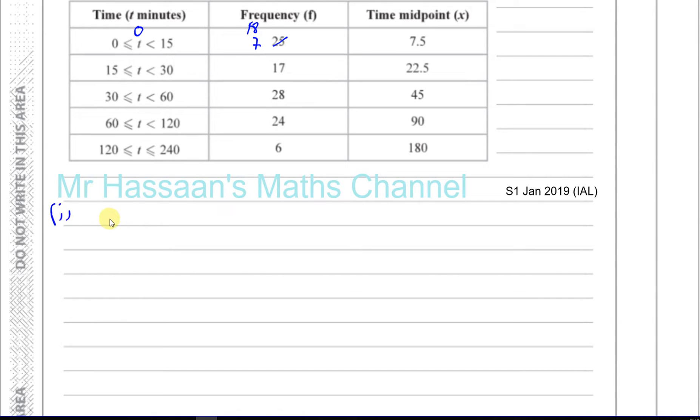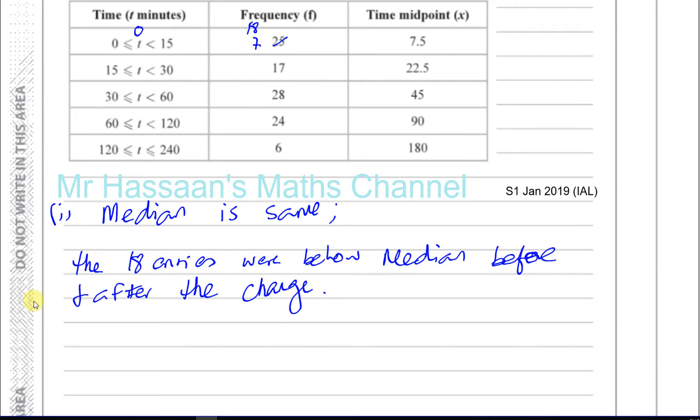So you can say that the median is the same. What's the reason it's the same? Because the 18 zeros, or you can say the changes, the 18 entries were below the median or less than the median before and after the change in our information.